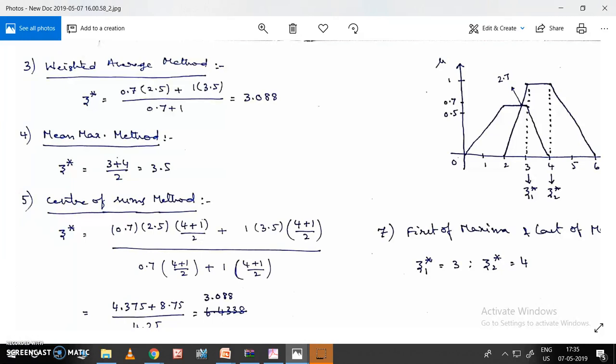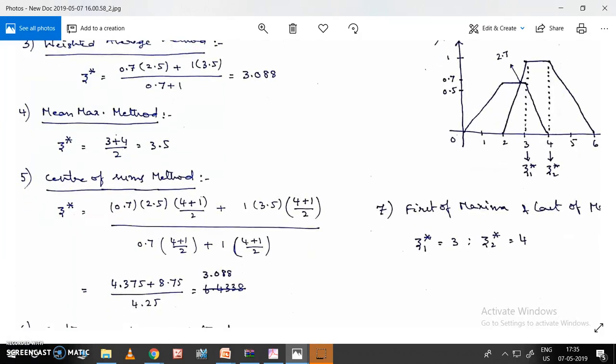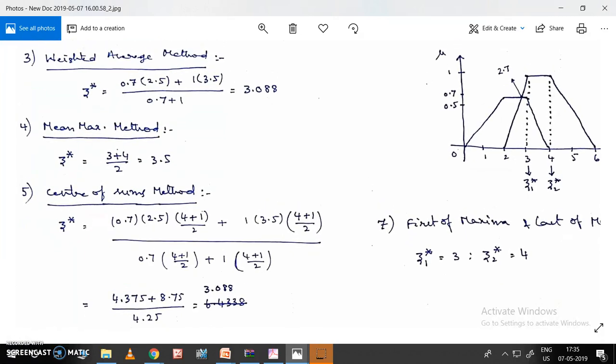Next is center of sums method. This is almost equal to weighted average method, but we need to introduce one more parameter: (4+1)/2. For fuzzy set 1, the base is 4 and the maximum value is 1, so (4+1)/2.